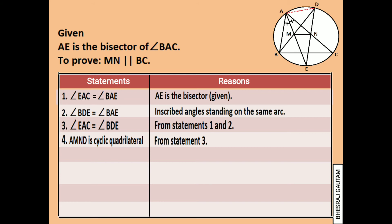Now if AMND is proved as cyclic quadrilateral, we can now say that angle DAN is equal to angle DMN, both being inscribed angles formed by the arc DN in the cyclic quadrilateral AMND.